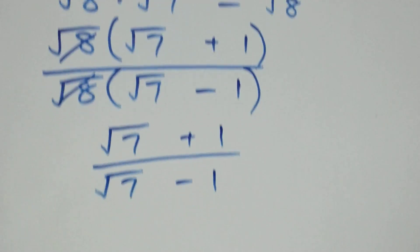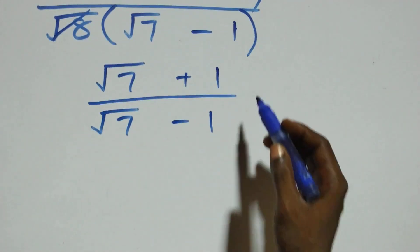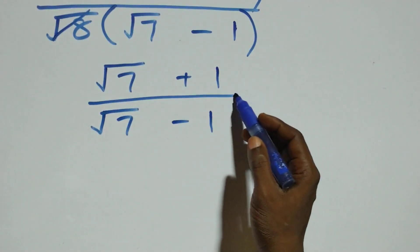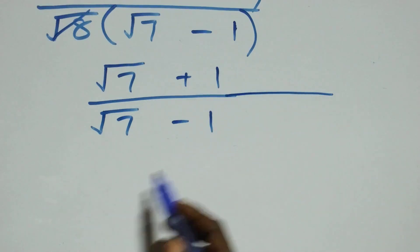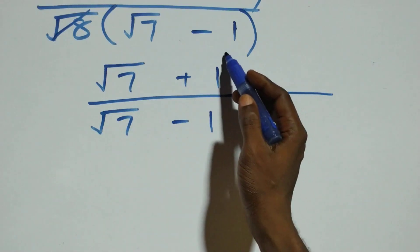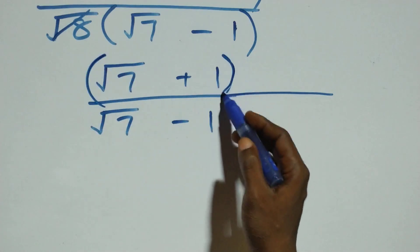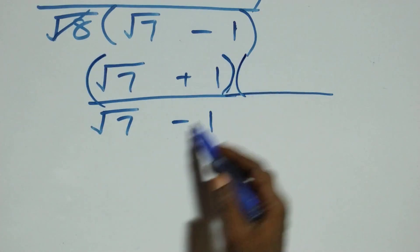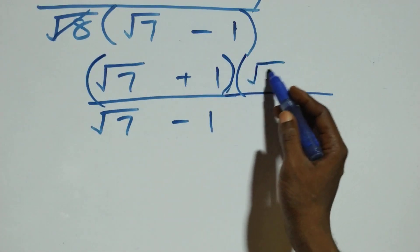Next step: we rationalize this expression. We multiply the numerator and denominator by the conjugate of the denominator, which is root seven plus one.